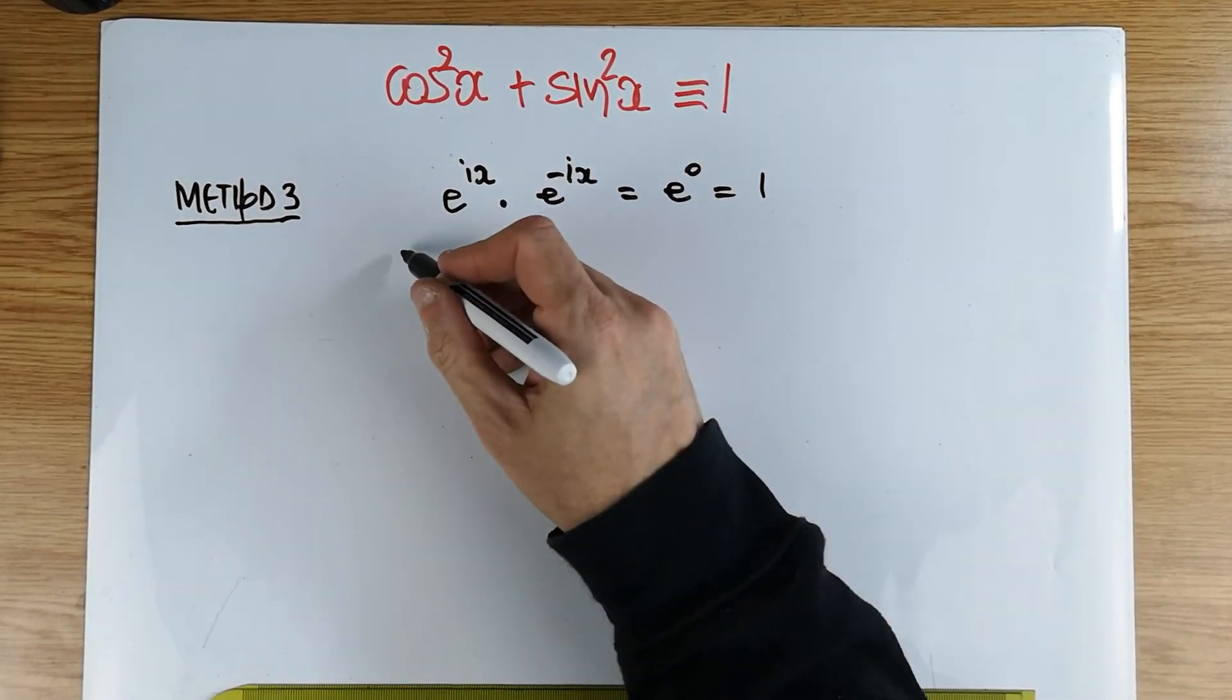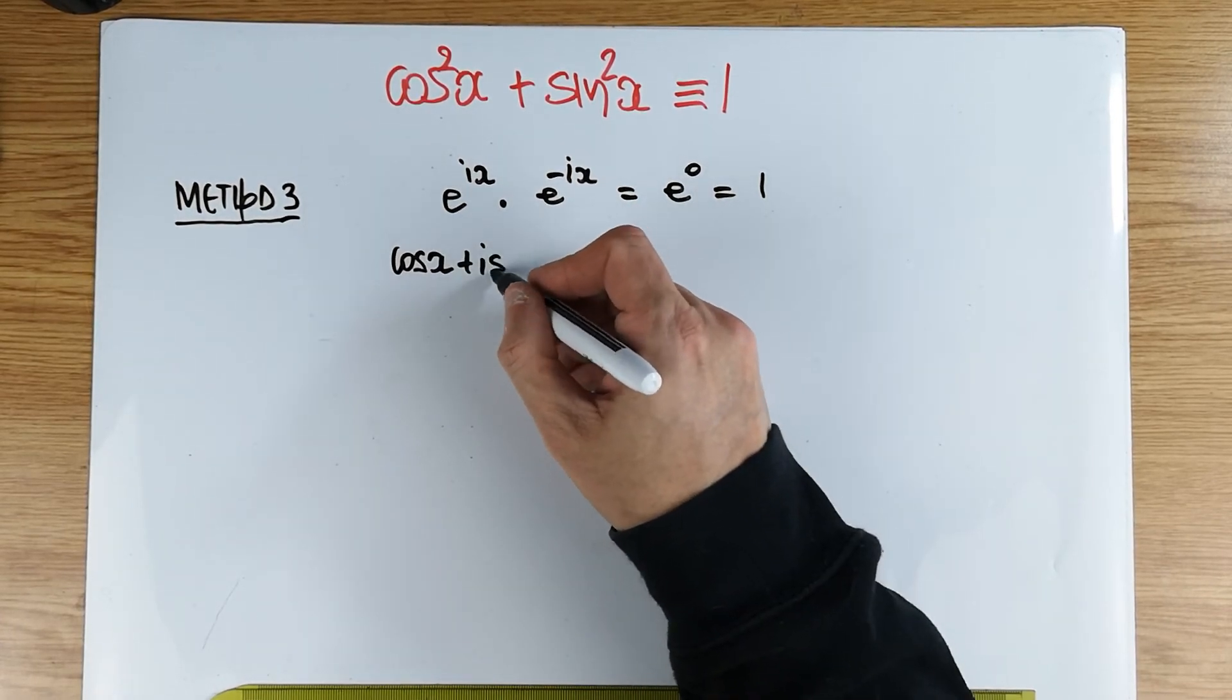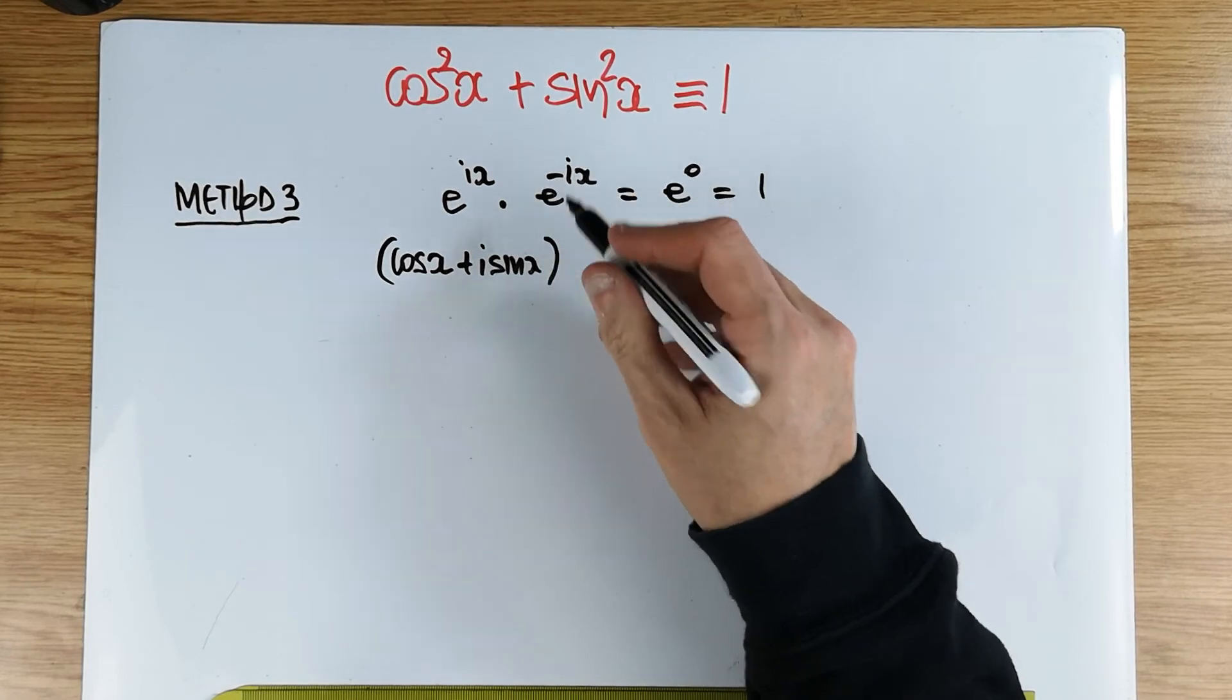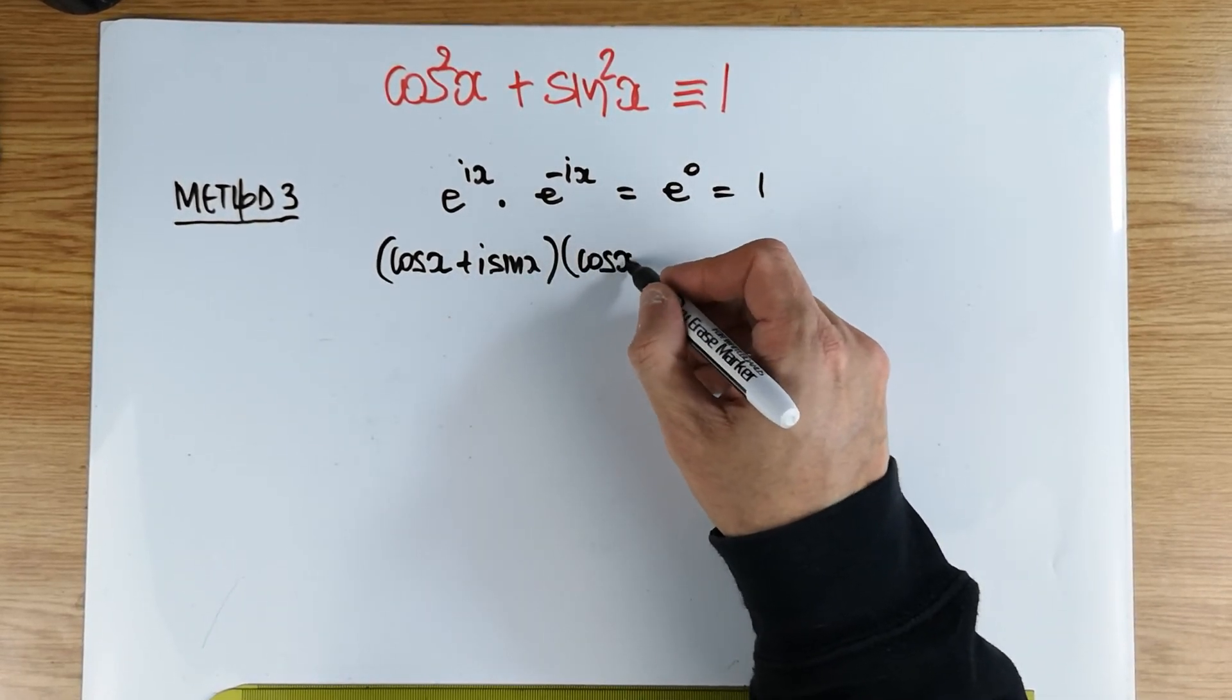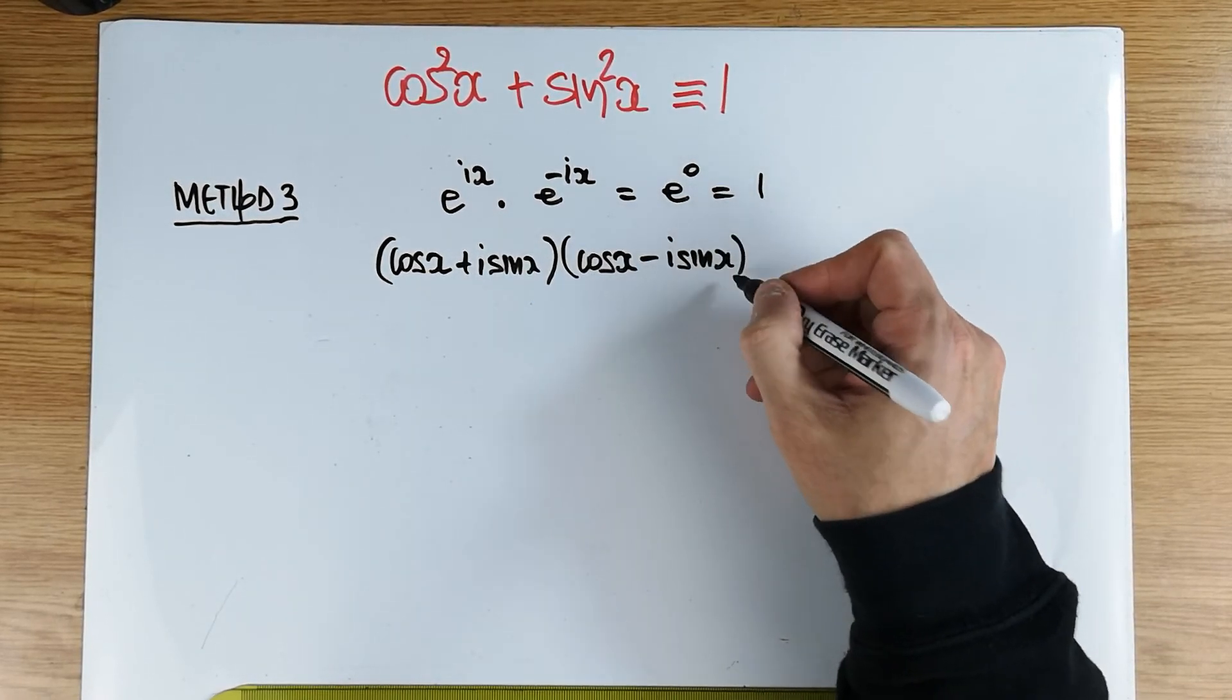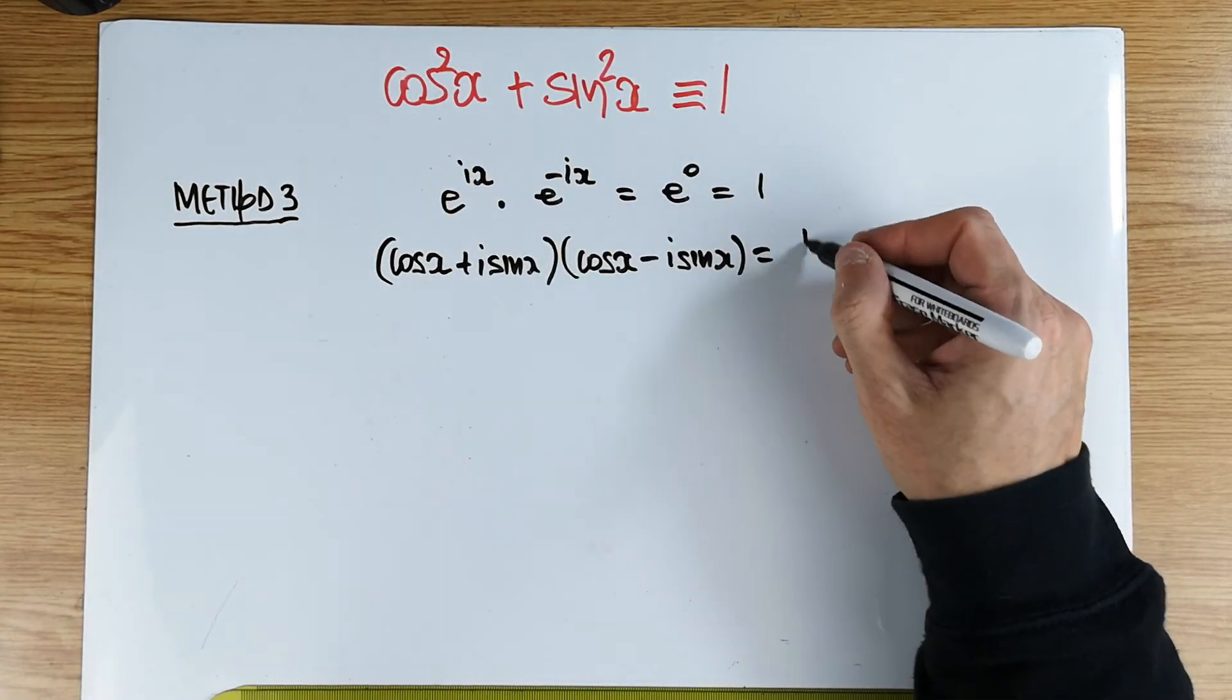So what is e to the ix? Well, quite clearly, by Euler's formula, that's going to be cos x plus i sine x. And what is e to the minus ix? Well, again, that's very simple. It's cos x minus i sine x. And, of course, we know that times that, that's that, and that's that, should be equal to one.